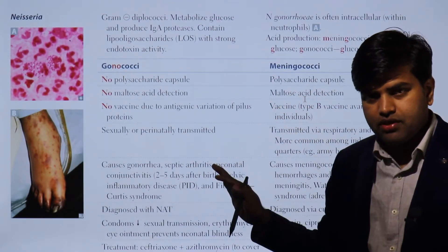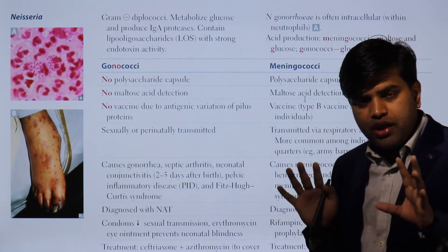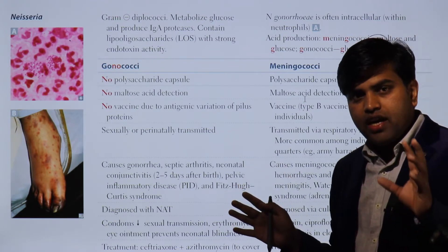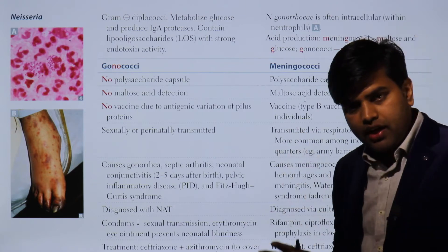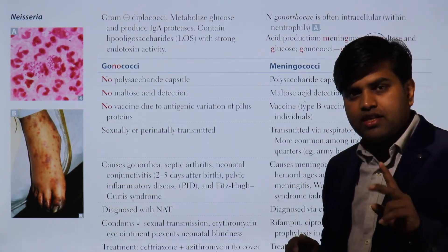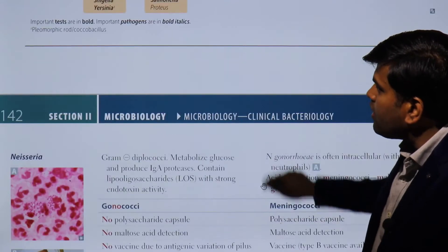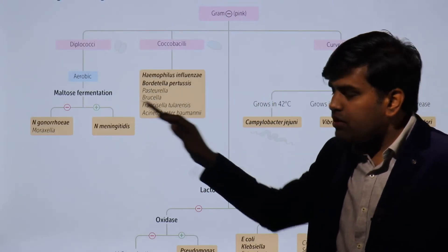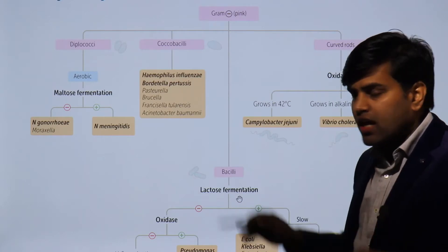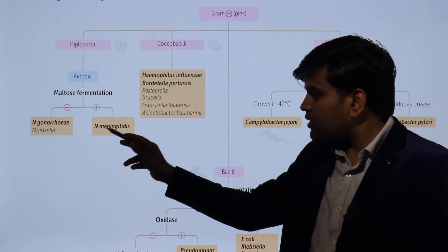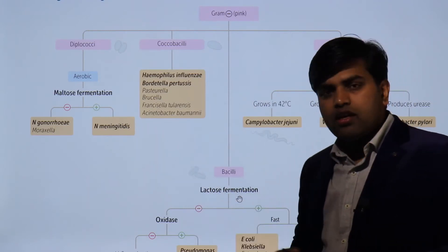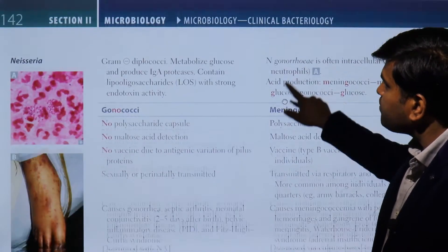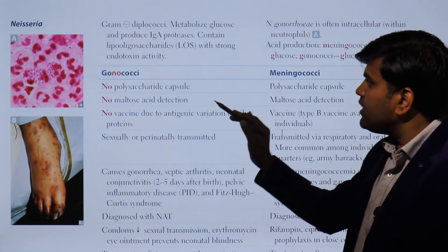Now moving forward to page 142, we will discuss the Neisseria species. Neisseria are gram-negative cocci — not coccobacilli. There are two species: N. gonorrhoeae and N. meningitidis. From the previous chart, we know they are aerobic diplococci, differentiated by one key test — maltose fermentation. Maltose fermentation is positive for N. meningitidis and negative for N. gonorrhoeae. This is very important for differentiation.